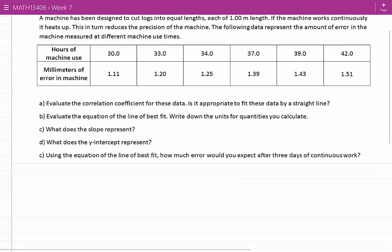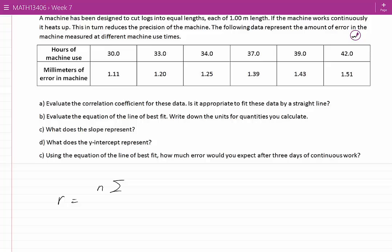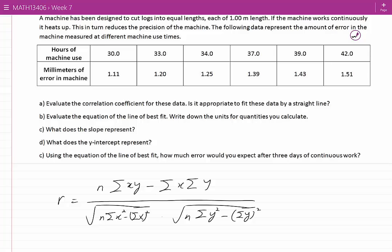The correlation coefficient equation is n sum xy minus sum x sum y divided by root n sum x squared minus sum of x squared times root n sum y squared minus sum of the y's squared. In this equation, n represents the number of data points. Here we have 1, 2, 3, 4, 5, and 6 data points in our problem. n is equal to 6.